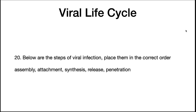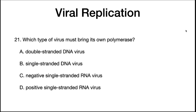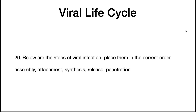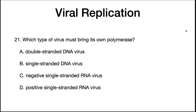To end this lecture, let's ask a couple of questions. First, place the steps of viral infection in the correct order. Second, which type of virus must bring its own polymerase? The answer to the first question is: attachment, penetration, synthesis, assembly, and release. The virus that needs to bring its own polymerase when it infects a cell is negative single-stranded RNA viruses — choice C. That brings us to the end of this first virology lecture.